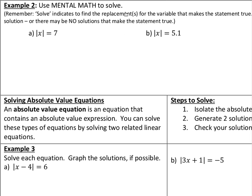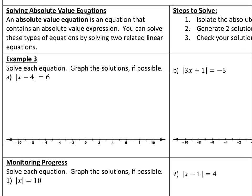Using mental math, I'm looking for some mystery number that has a distance from 0 of 7 units. What's inside could be a positive 7, or it could be negative 7 — that's also 7 units away from 0 in the opposite direction. Letter B: I'm looking for something 5.1 units away. That thing inside could be positive 5.1 or negative 5.1; either way it's the same distance.